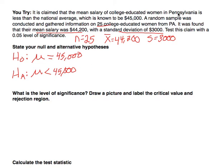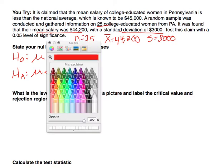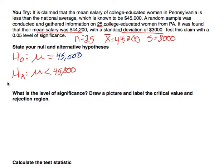It helps to label which hypothesis holds the original claim. The original claim is in the alternative hypothesis — that the mean is less than $45,000. Sometimes a claim will be listed as the alternative and sometimes as the null, but here the original claim is that the mean is less than $45,000. That's just setting the problem up.